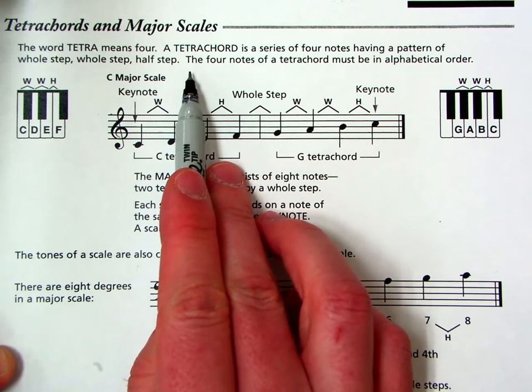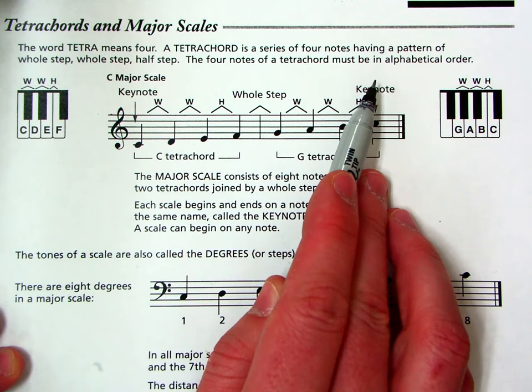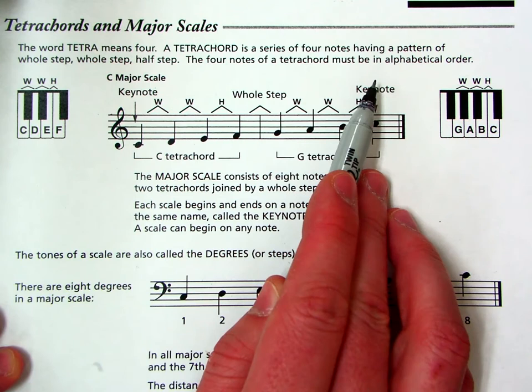Now, one other key thing, so whole, whole, half, whole step, whole step, half step. Also, the four notes of a tetrachord must be in alphabetical order. So we have C, D, E, F. That makes sense.